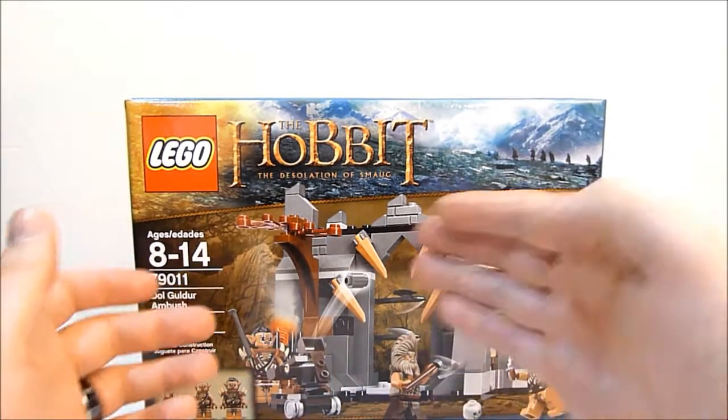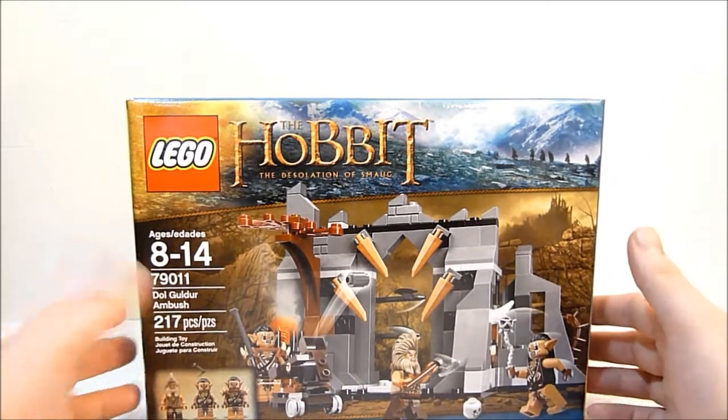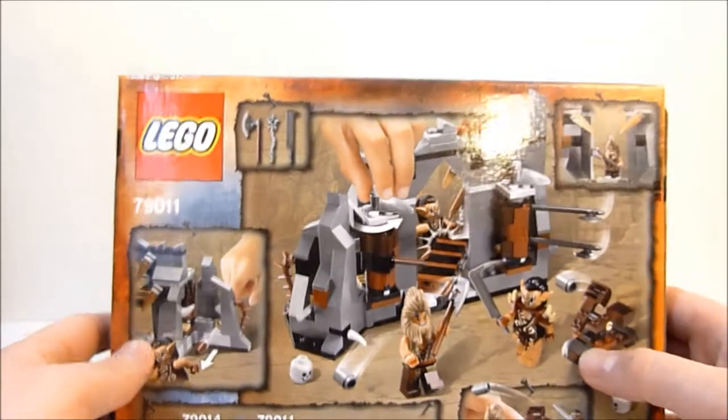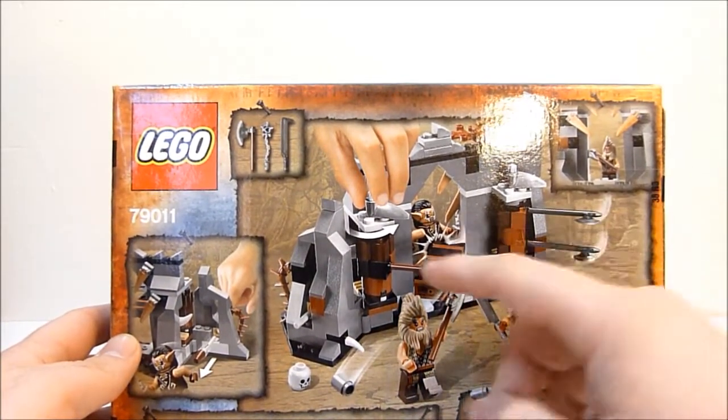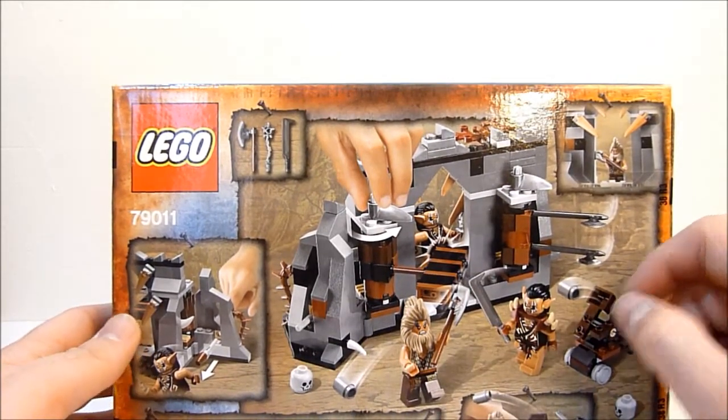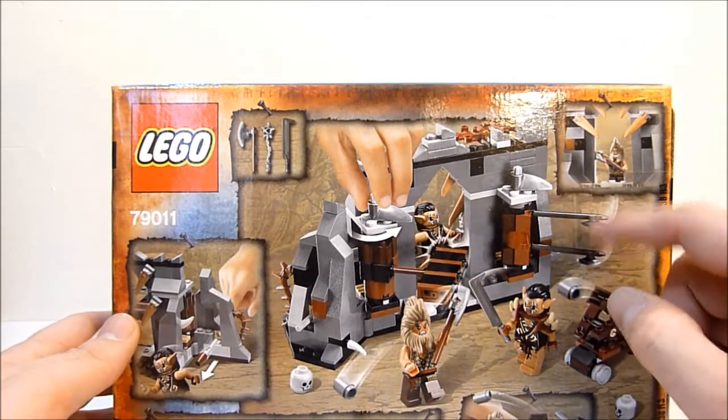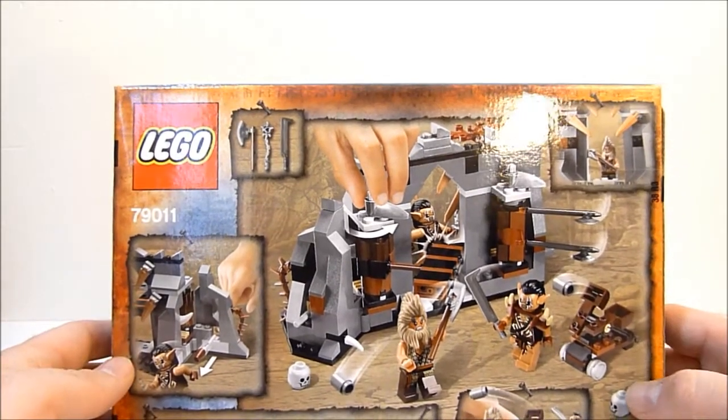It's just kind of the opening of Dol Guldur, and on the back you can see some of the play features here. It's got a big gauntlet inside the opening here. You've got a little hammer that looks like it swings and knocks people around, and then this one has the axes on it, so that's pretty neat.